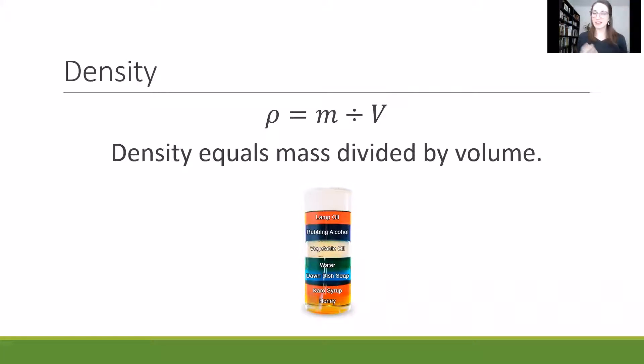So when you think of something like honey, which is very thick, that has a high density. Whereas something like lamp oil, which moves quickly, is very thin, can spread easily, that would have a low density.